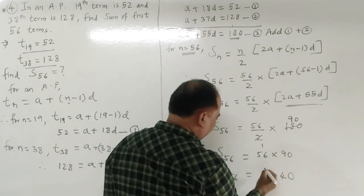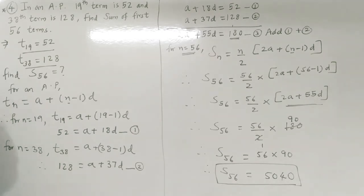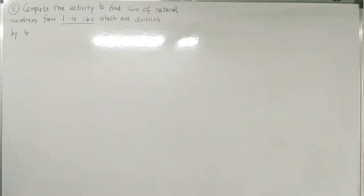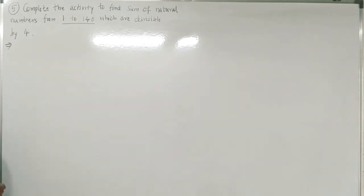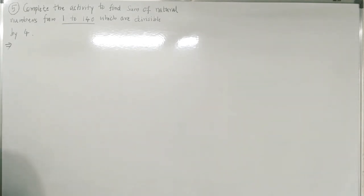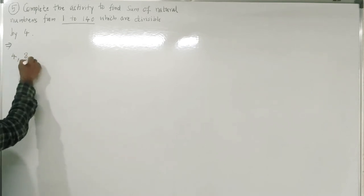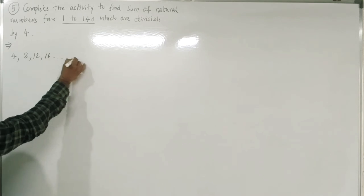Fifth example (activity): find the sum of natural numbers from 1 to 140 which are divisible by 4. The numbers divisible by 4 between 1 and 140 start at 4, then 8, 12, 16, and so on.